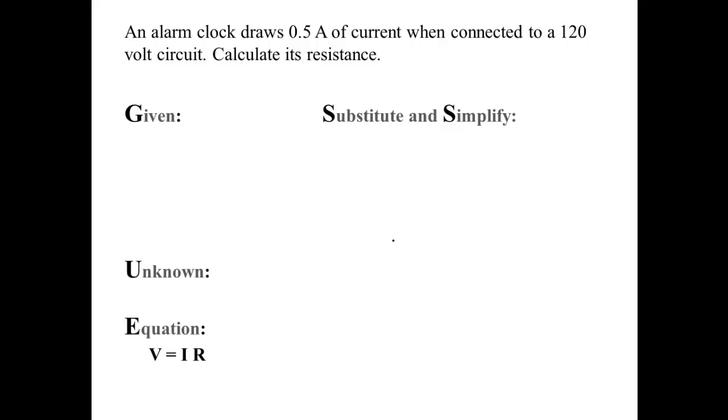An alarm clock draws 0.5 amps of current when it's connected to a 120-volt circuit. Calculate its resistance.